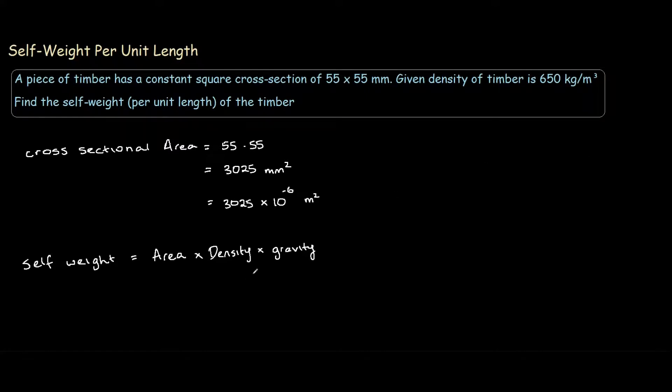To understand why self-weight per unit length is area times density, consider a beam with a one meter length. The self-weight per unit length of this beam is just the cross-sectional area multiplied by the weight of that cross-sectional area, which comes from the density.